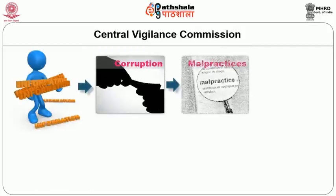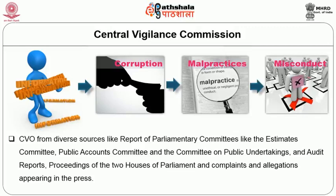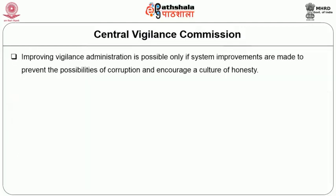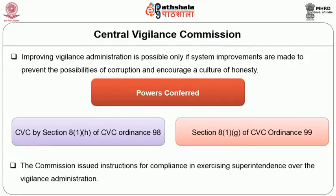Information about corruption, malpractices or misconduct comes to the Central Vigilance Commission from diverse sources like reports of parliamentary committees — the Estimates Committee, the Public Accounts Committee and the Committee on Public Undertakings — audit reports, proceedings of the two Houses of Parliament, and complaints and allegations appearing in the press. Improving vigilance administration is possible only if system improvements are made to prevent possibilities of corruption and encourage a culture of honesty. In exercise of the powers conferred by Section 8(1)(h) of the CVC Ordinance 1998 and Section 8(1)(g) of the CVC Ordinance 1999, the Commission issued instructions for compliance in exercising superintendence over the vigilance administration.